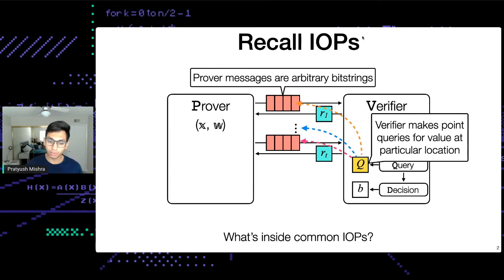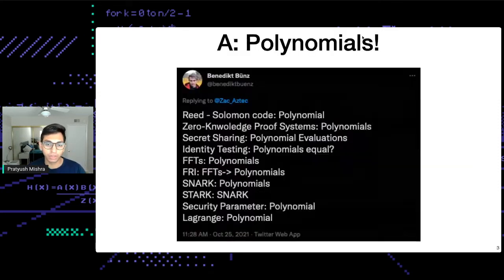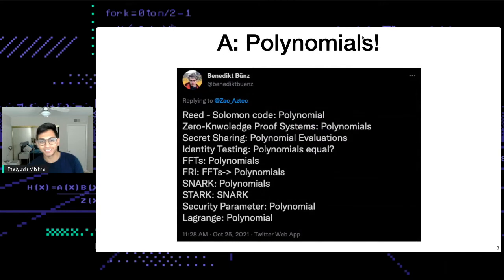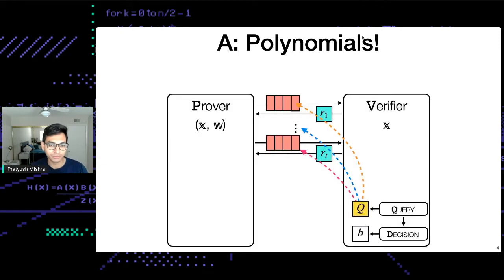Why have IOPs been useful? Let's take a look inside common IOPs. What is the underlying technique behind common IOPs? The answer — spoiler alert — is polynomials. Everything in crypto is polynomials, so it's no surprise that we have polynomials here as well.